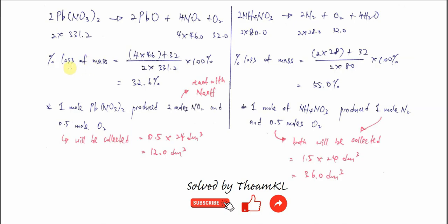For the percentage loss of mass, we can use the molar mass to do it. We just use the molar mass of the lead(II) nitrate. So let's say it's two times 331.2, and this one is four times 46 plus 32, times 100 percent, because the nitrogen dioxide and oxygen gas is the mass loss. So you get 32.6 percent.